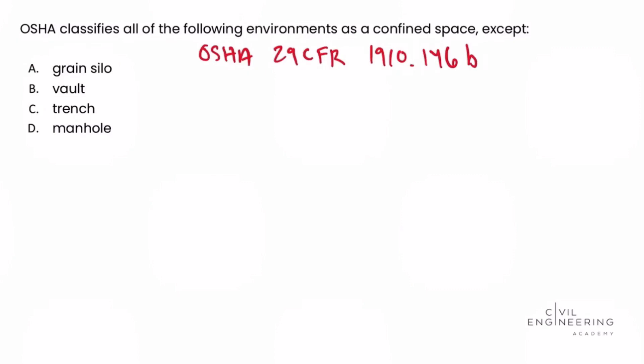And that is the definition section of the regulation. We see that OSHA has defined a confined space as a space that, one, is large enough and so configured that an employee can enter and perform assigned work. Two, has limited or restricted means for entry or exit.